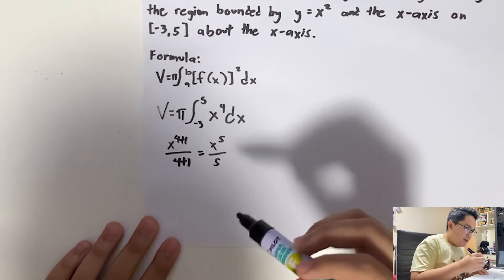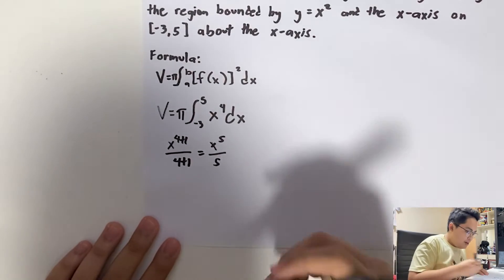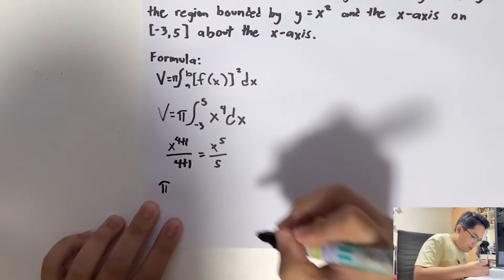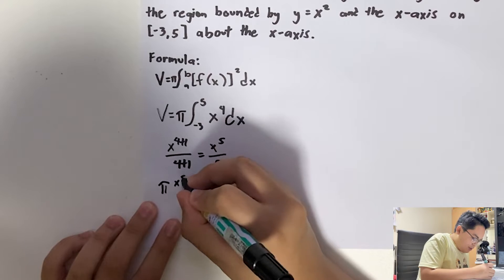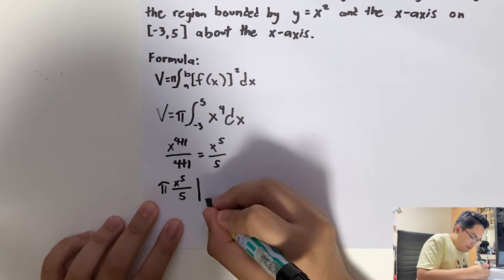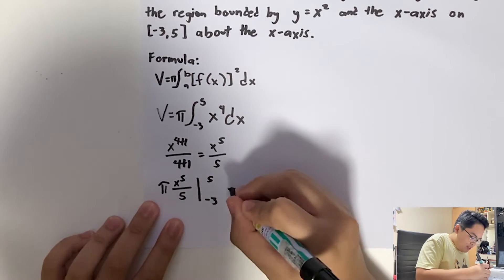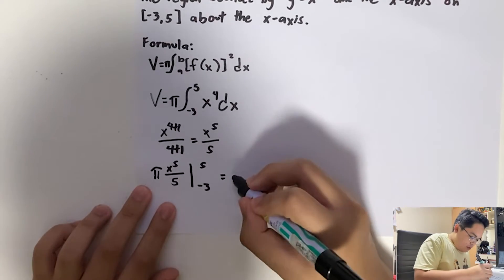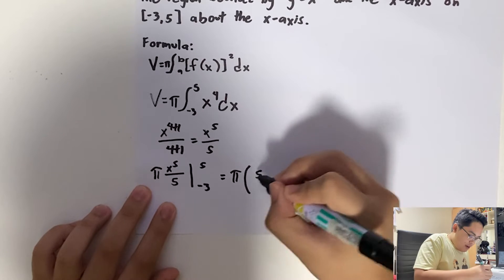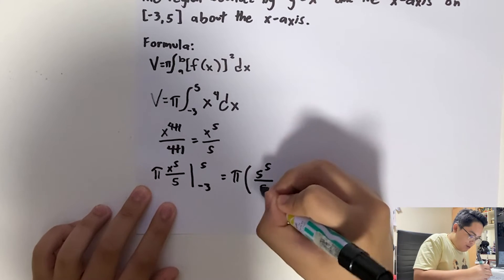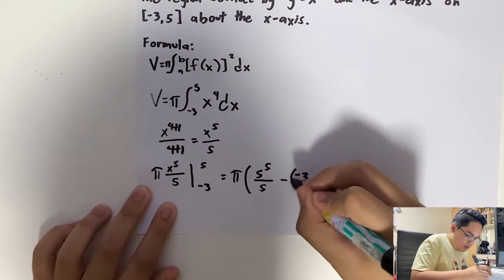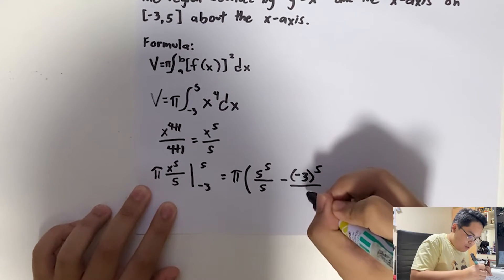So let's find the definite integral from -3 to 5. So let's go ahead and illustrate that for a while. So π[x⁵/5] from -3 to 5 will be equal to π multiplied by 5⁵/5 minus (-3)⁵/5.